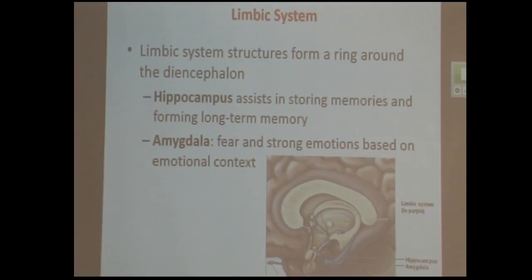So moving on to some more parts of the brain. The amygdala is where the emotions come from. So fear, strong emotions. And the hippocampus, that's where it helps in storing memories and forming long-term memories.